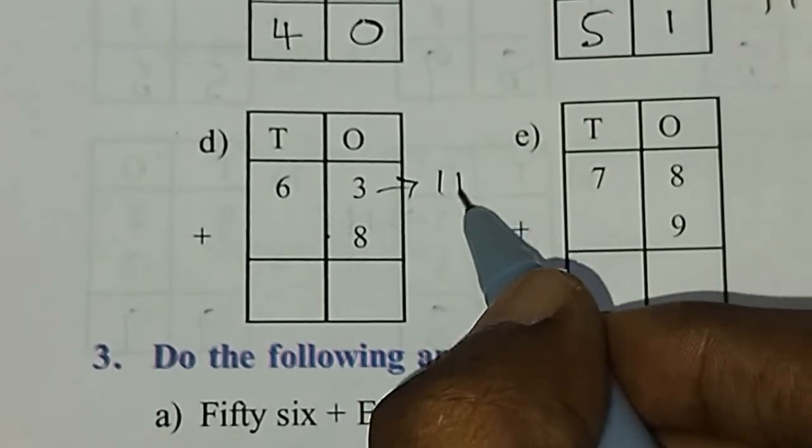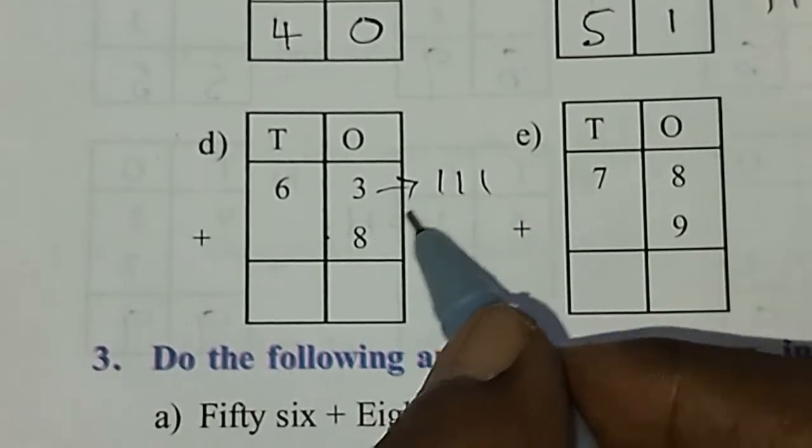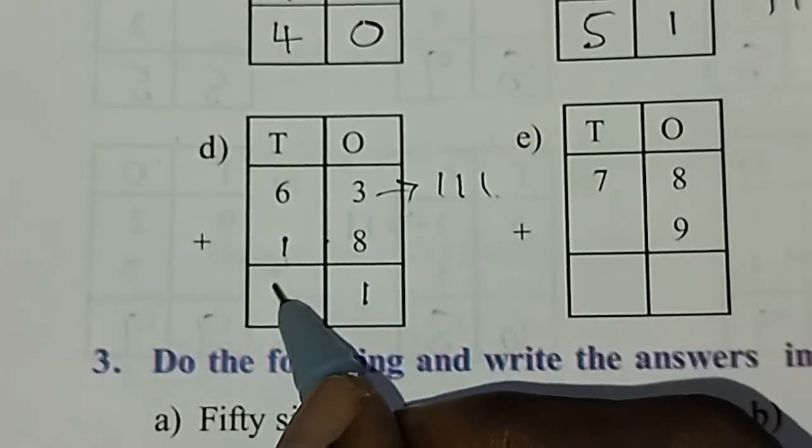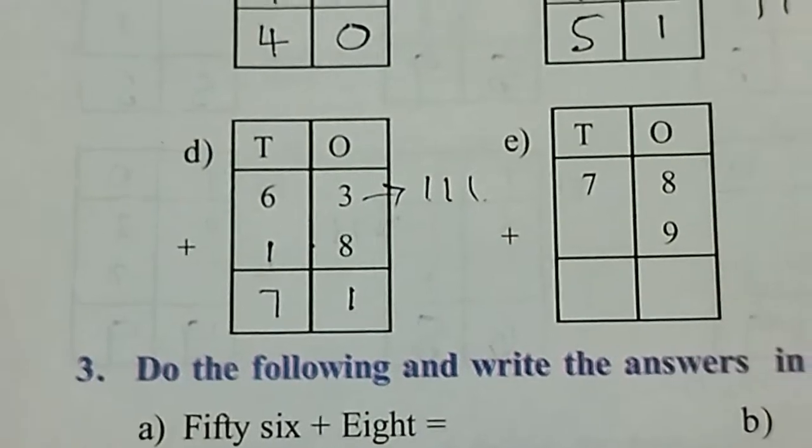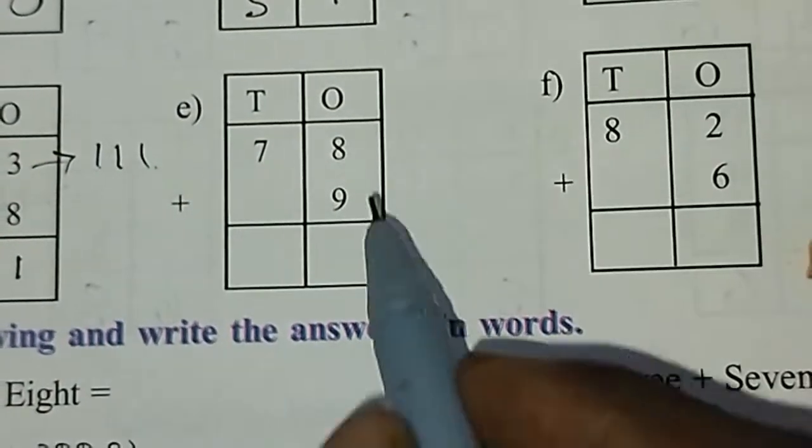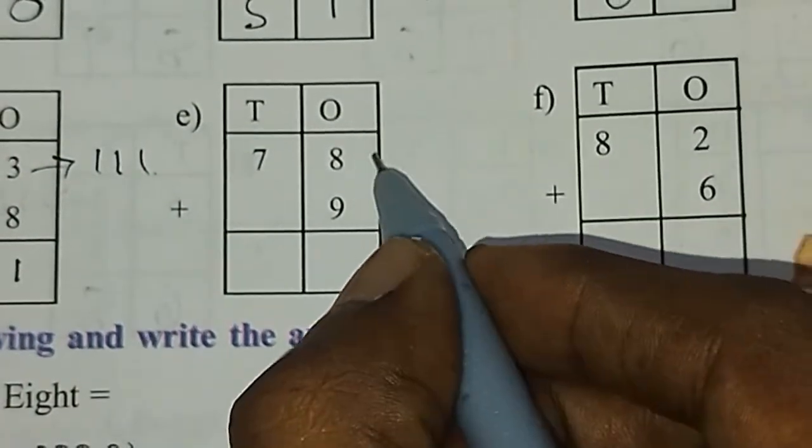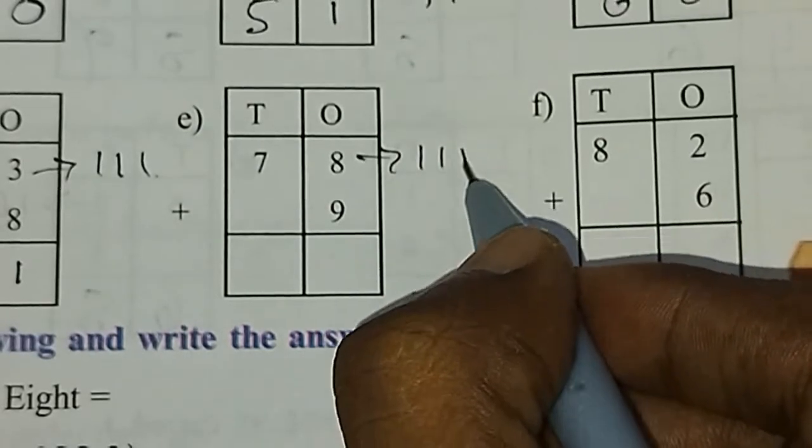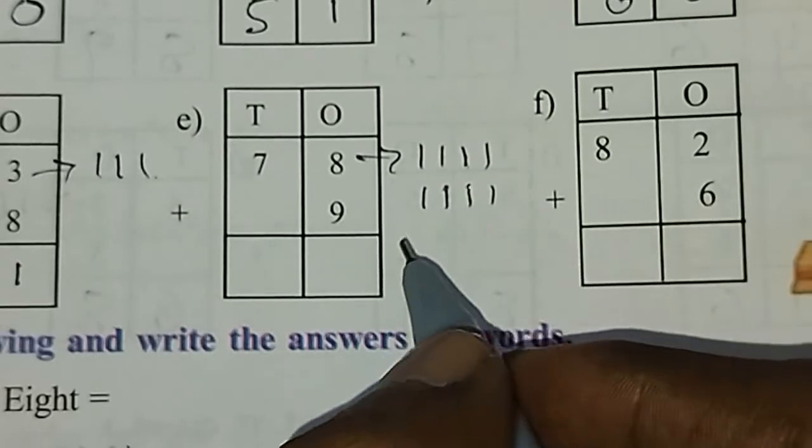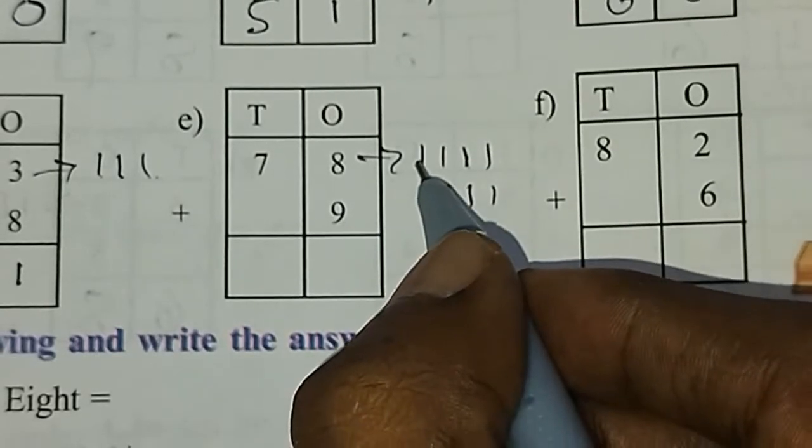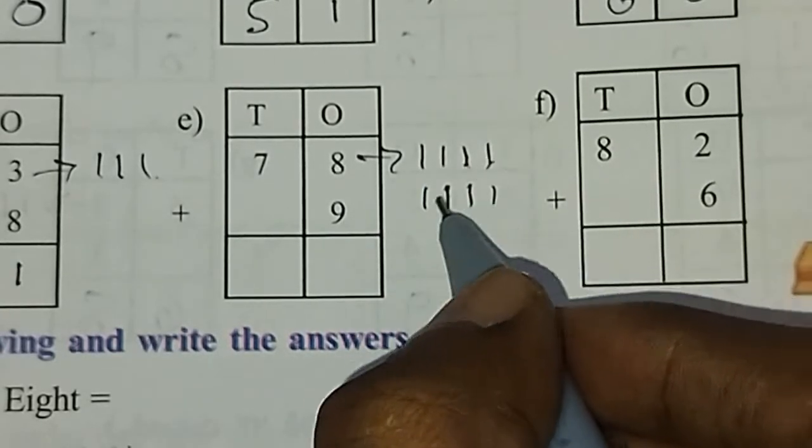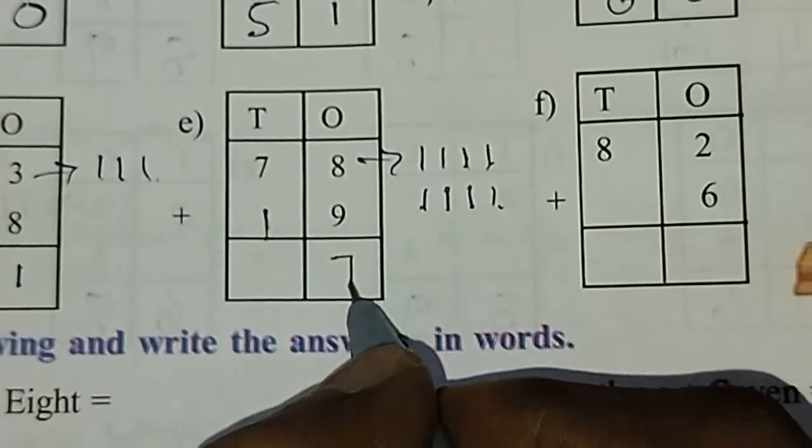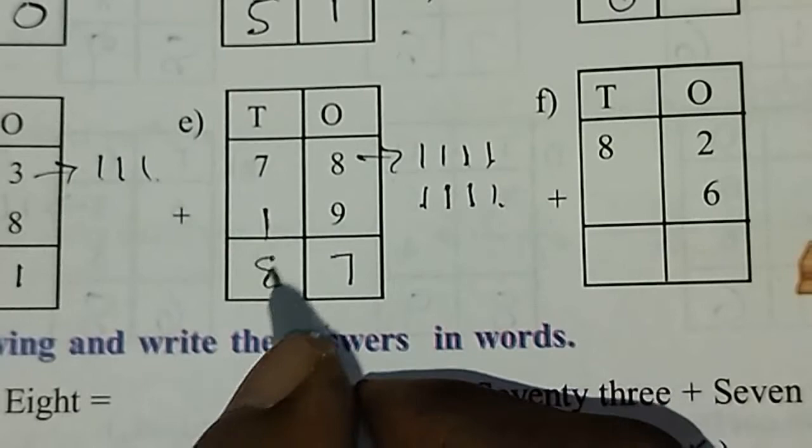Next, counting: 1, 2, 3, then to 8. After 8 is 9, 10, 11, and 6 plus 1 is 7. Next, 9 plus 8. Starting from 8, count: 1, 2, 3, 4, 5, 6, 7, 8. Then from 9: after 9 is 10, 11, 12, 13, 14, 15, 16, 17. That's 7 and 8.